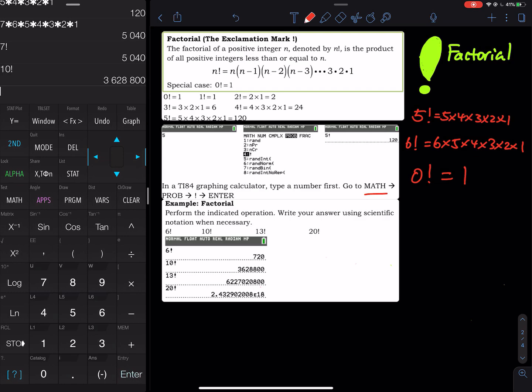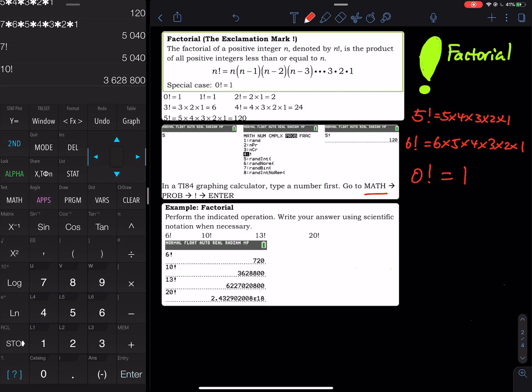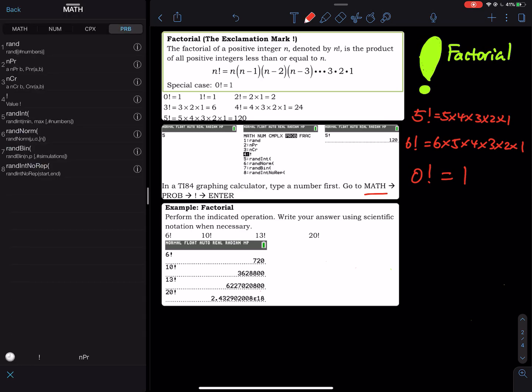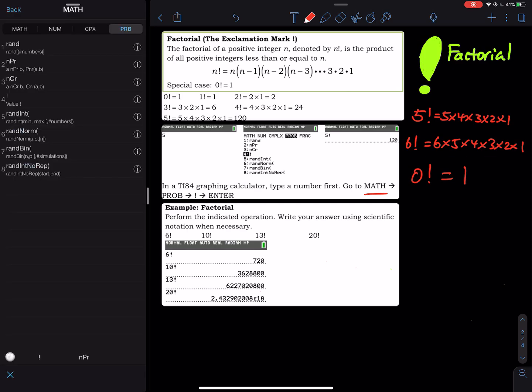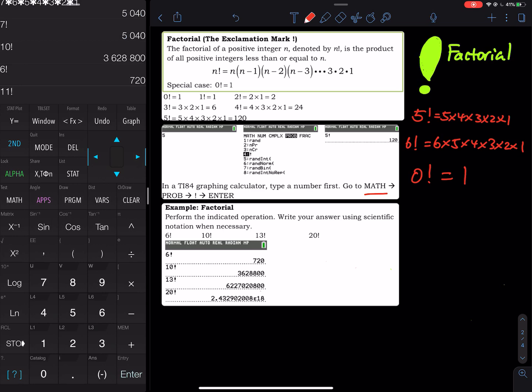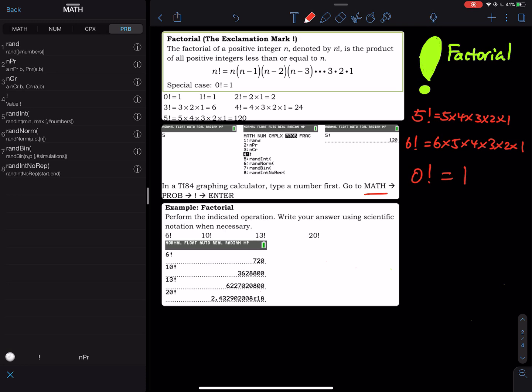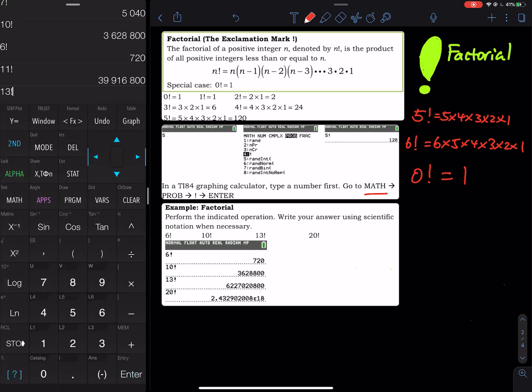In this exercise I have 4 factorials that I would like you to do. Let's take a look at the first one: 6, math, PRB, and then number 4. There you go, 720. 10, we did it. Let's do 11. 11, math, probability, PRB, and then number 4. That's the factorial. And then 13, math, PRB, exclamation mark, or factorial. Don't say the word exclamation mark, factorial.